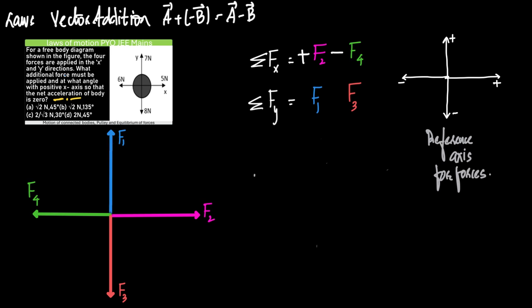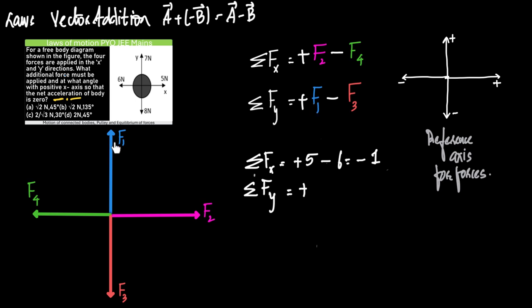F1 is moving upwards, so it will be taken as positive. F3 is acting downwards, and downward forces will be taken as negative. Sigma Fx is plus F2 minus F4, which is plus 5 minus 6, giving minus 1N. Similarly, sigma Fy is plus F1 minus F3, which is plus 7 minus 8, equal to minus 1N.